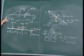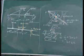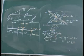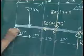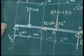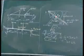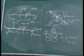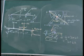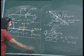Finally, we come to support D, which is a hinge support. For a hinge support, we will have two reactions: VD and HD. We have now completed our free body diagram. The second step will be to apply the conditions of equilibrium.